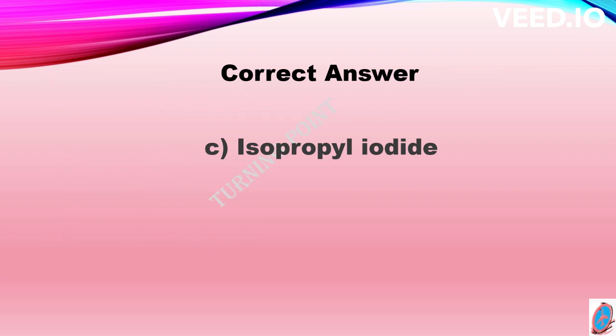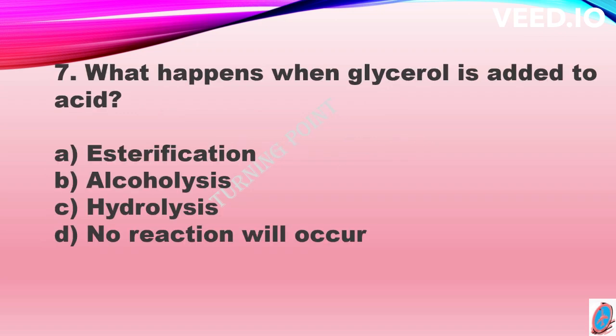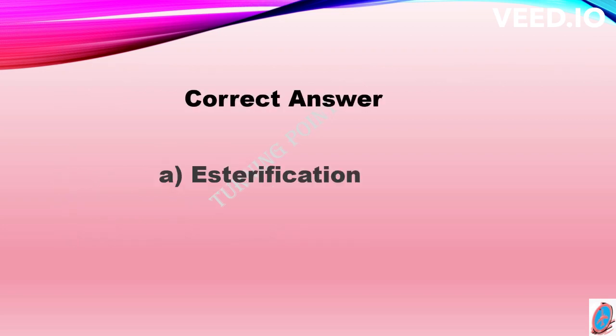What happens when glycerol is added to acid? The process is called option A esterification, option B alcoholysis, option C hydrolysis, and option D no reaction. The correct answer is option A, esterification. The O-H of glycerol combines with O-C or O-H of the acid to form an ester, so the process is called esterification.